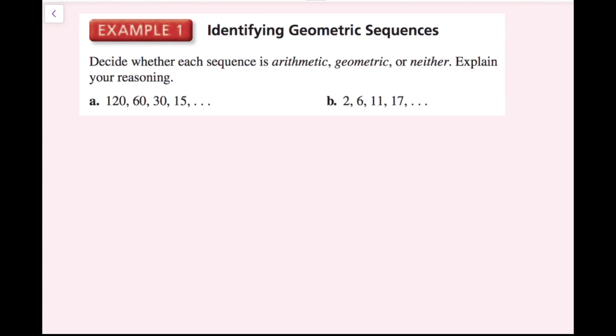For example 1, we need to decide whether each sequence is arithmetic, geometric, or neither, and explain your reasoning. So for part A, I have 120, 60, 30, and 15. If you notice, each time I'm cutting this in half — I'm dividing by 2. But we want to think of things in terms of multiplication, so another way to think of dividing by 2 is multiplying by the reciprocal, which is 1/2. So each time I'm multiplying by 1/2, which means this is a geometric sequence.